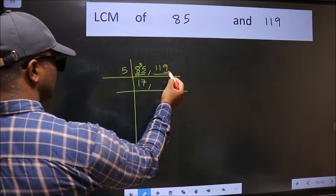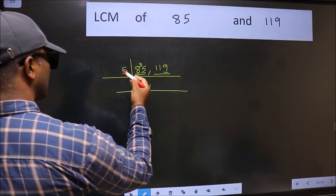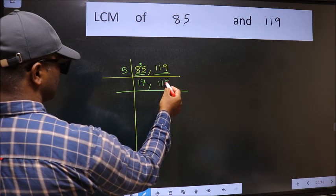The other number 119, last digit is neither 0 nor 5. So this number is not divisible by 5. So you write it down as it is.